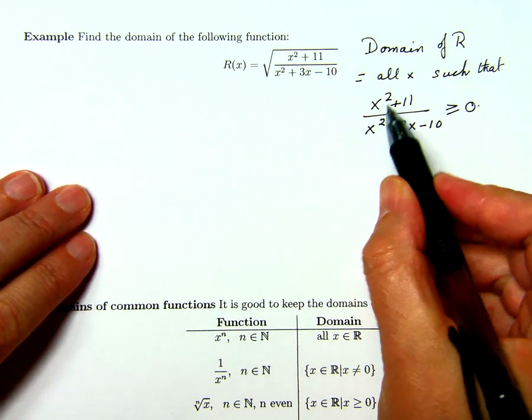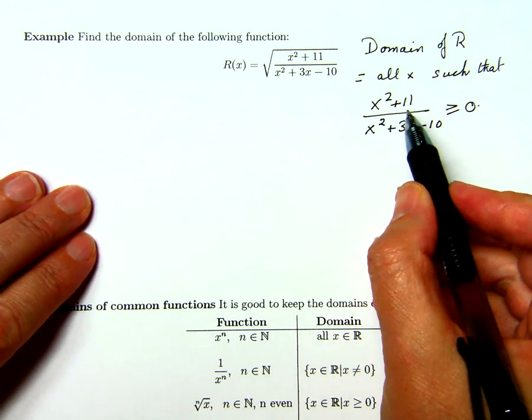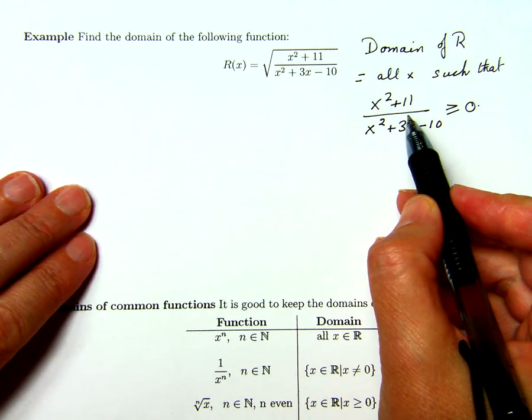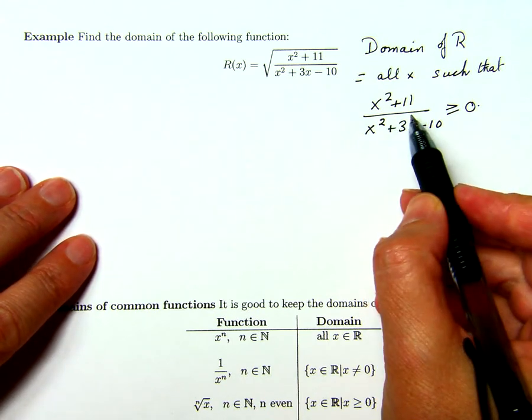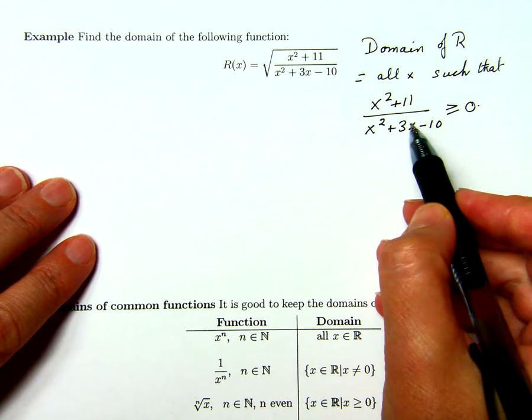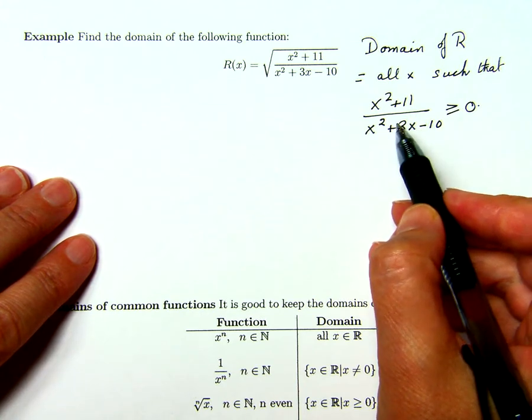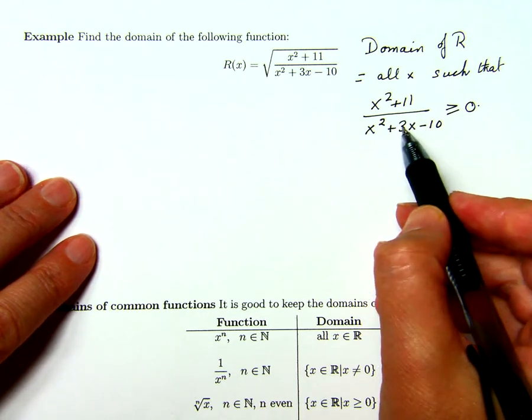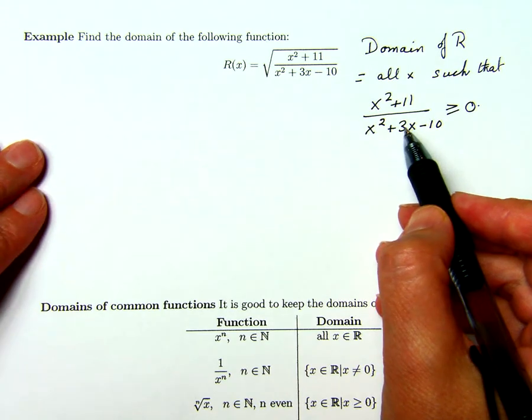We should try to find the factors of this if you cast your mind back to the lecture on inequalities. The method is to find the factors and figure out where the factors change sign, and then analyze what's happening overall to this function.